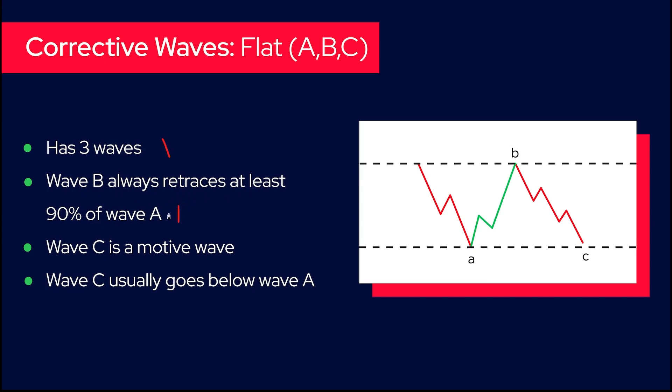Same thing - three waves ABC. Wave B always retraces at least 90 percent of wave A. This is the golden rule of a flat. B is almost retracing everything and sometimes it can go a bit above or slightly below. The perfect flat is when it goes at the same level, but it doesn't often happen. Usually you are between 90 and 110 percent.